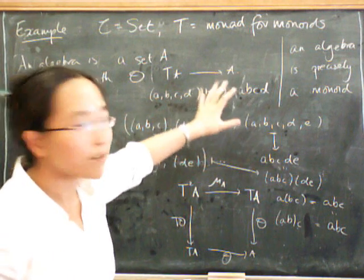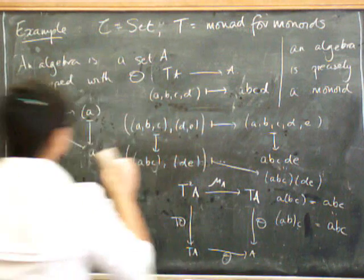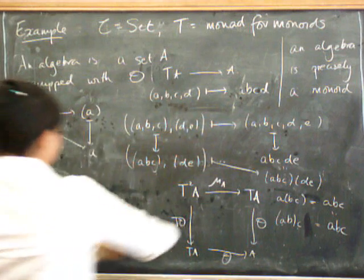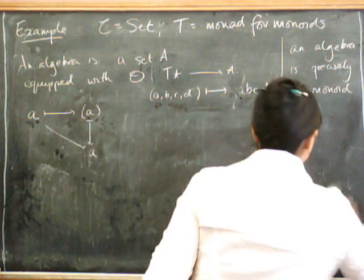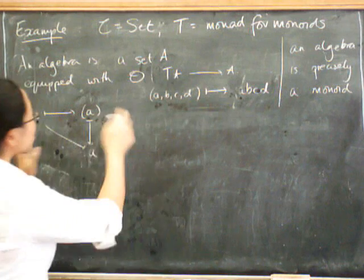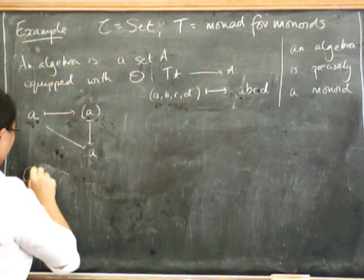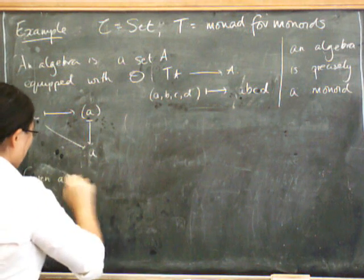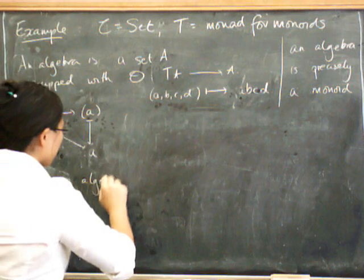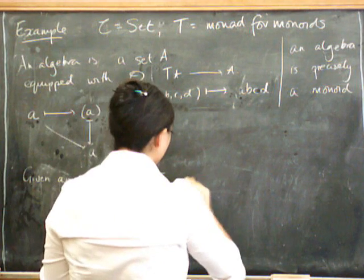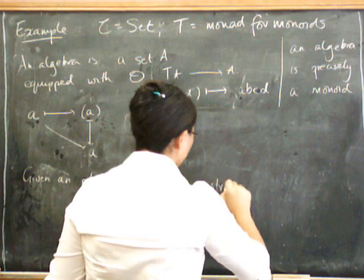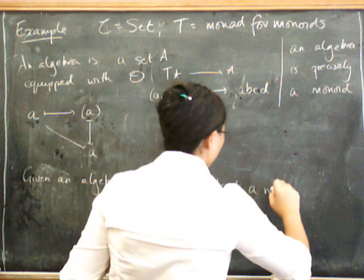Now I'm in trouble because I'm a bit hazy about my notation here. So now, because I've got some time, I'm going to be a little bit pedantic about my notation and say, given an algebra for this monad, given an algebra for T, I'm going to construct a monoid.